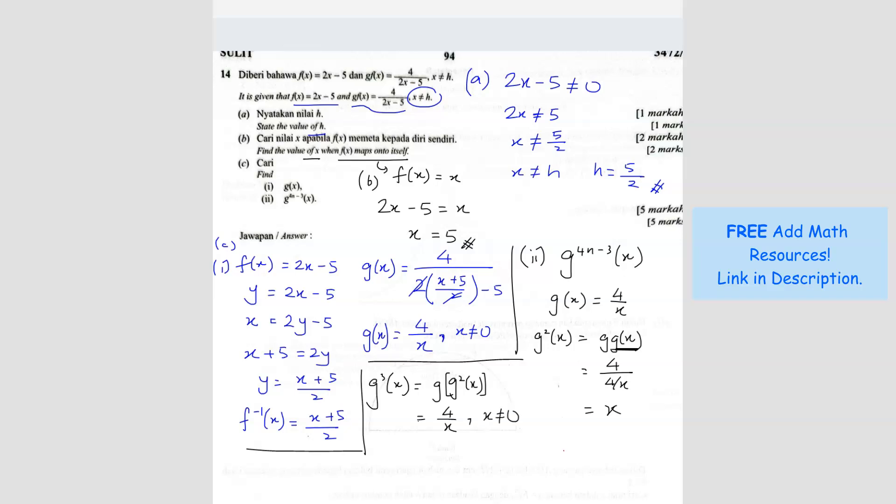So you do see a pattern here. The pattern is when it is power 1, like this one, the first one, which is, that means odd number. When the power is odd number, you get 4 over x. Okay, when the power is even number, even number, you get x. And then when it's odd again, like this one, odd, you get 4 over x again. So that means odd number 4 over x, even number is x. Okay, so now we are looking for what?